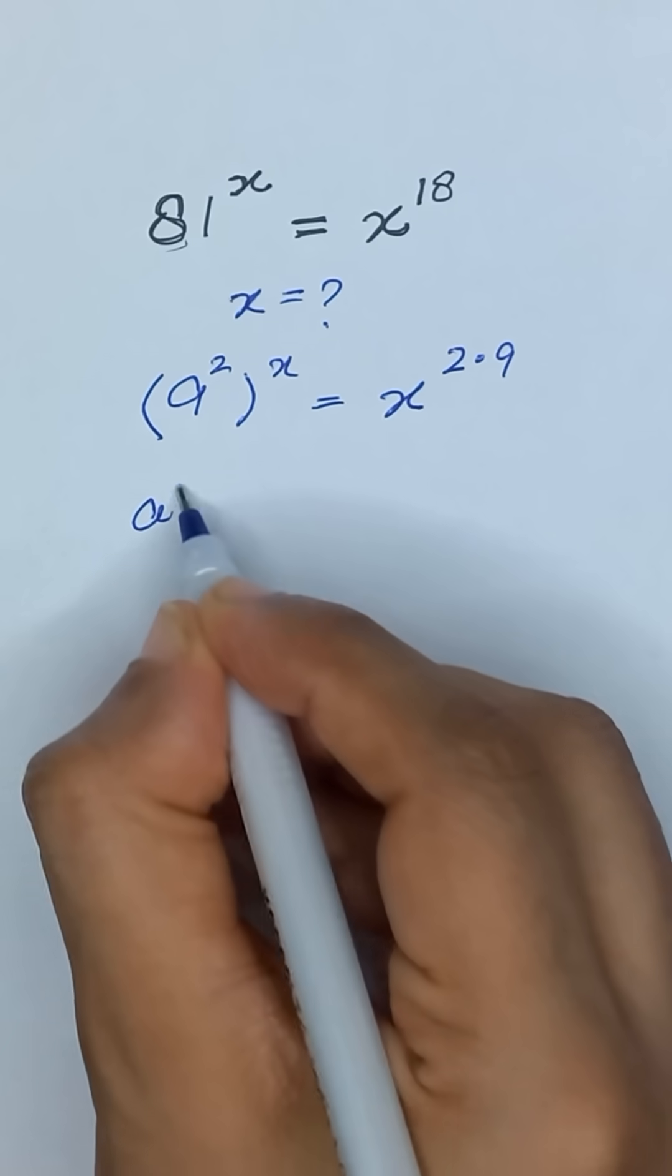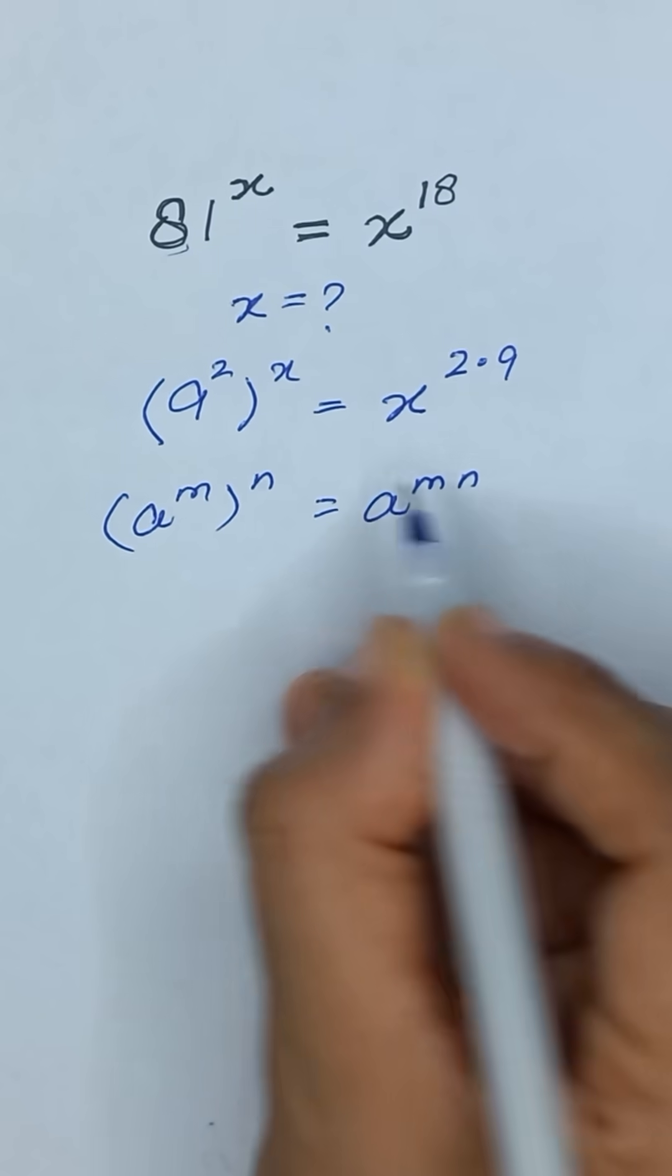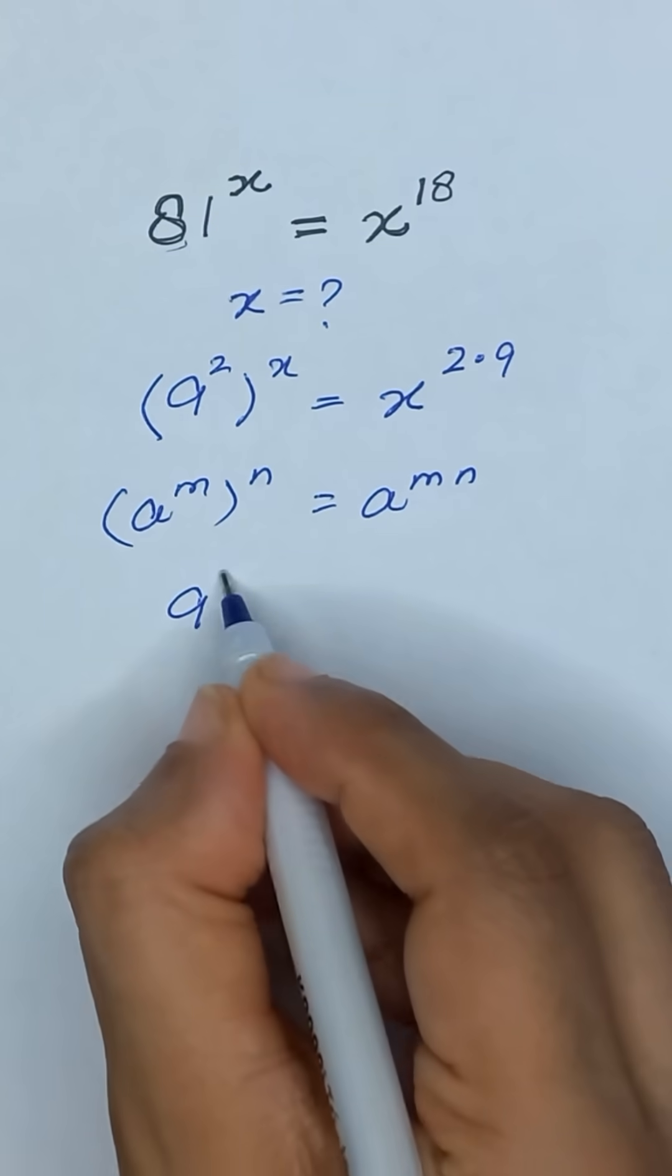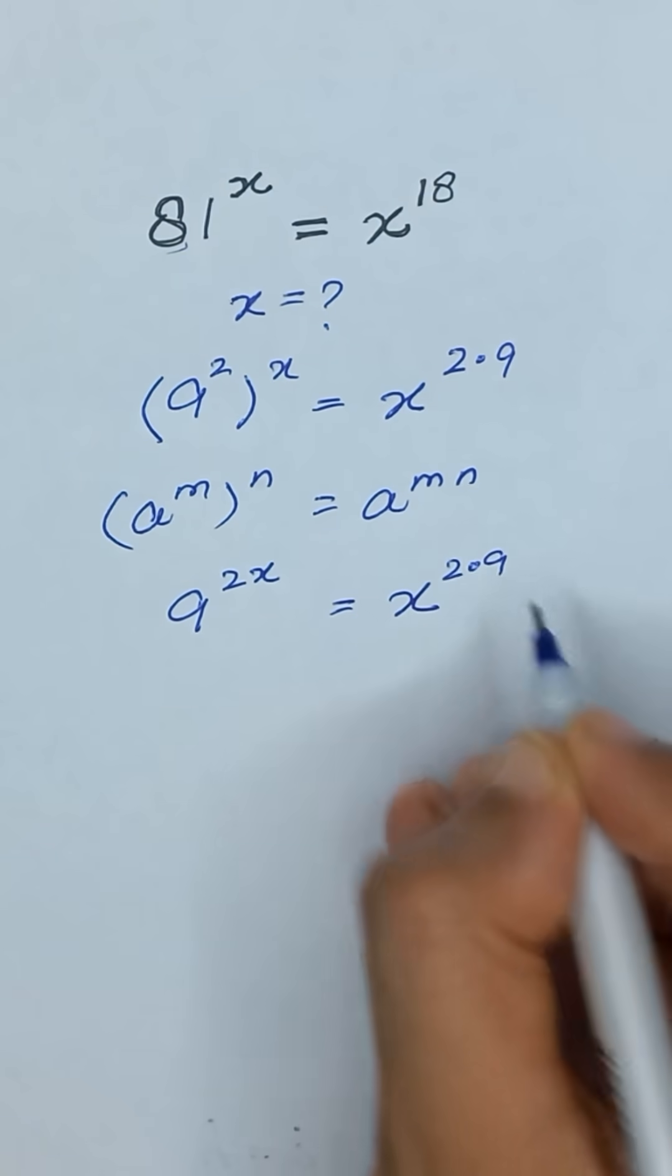As we know that a to the power m whole power n is equal to a to the power mn, it will become 9 to the power 2x is equal to x to the power 2 times 9.